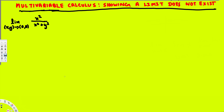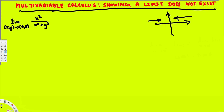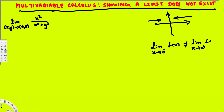In this video we are going to see how to show that a limit does not exist in three-dimensional space. In two-dimensional space, if the limit approaching from the left side is not equal to the limit approaching from the right side, then we say the limit does not exist. We express that as: limit as X approaches a from the left of f(X) is not equal to the limit as X approaches a from the right of f(X).